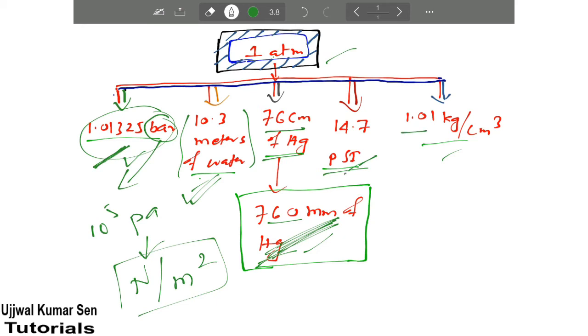Now next, what is that? That is 1.01 kg per centimeter cube. So these all are equal to what? One atmospheric pressure.